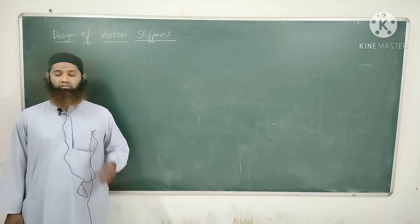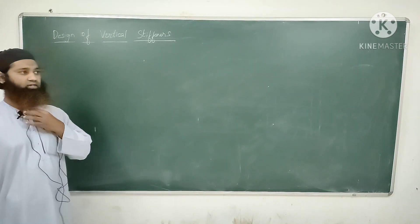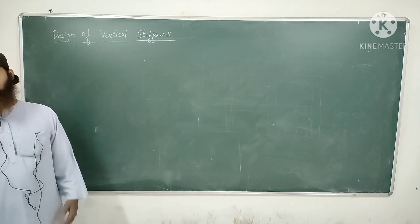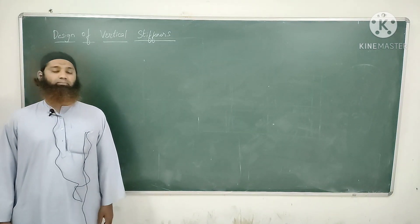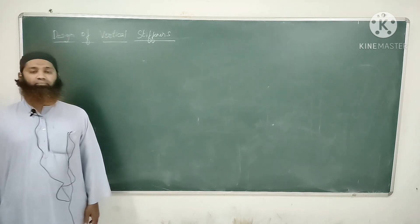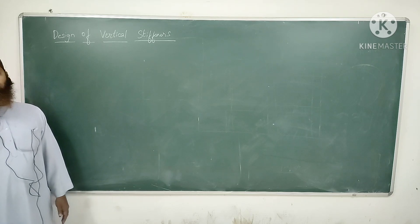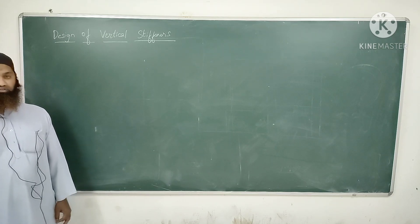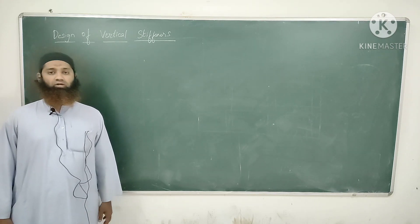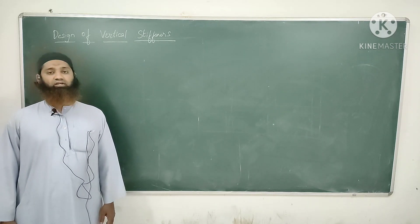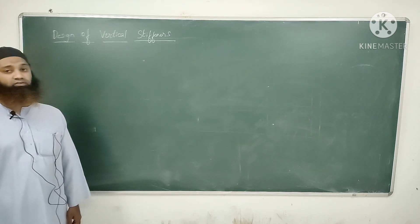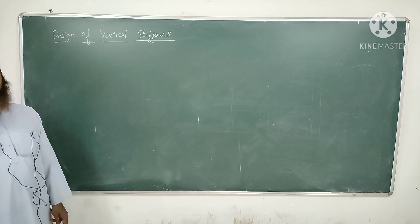Good afternoon everybody, welcome to this session of Structural Engineering, Design and Detailing. As we had seen in the previous class, we had seen the design of the plate girder. I had also explained all the different elements which attach to the plate girder, and what are the vertical stiffeners and horizontal stiffeners, when they are provided. Today we will be seeing the design of the vertical stiffener — where it is provided, what will be the spacing, and how do we design it.